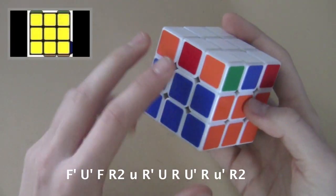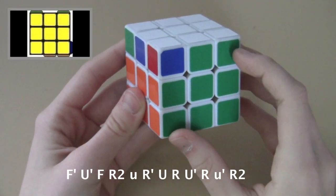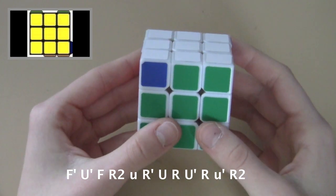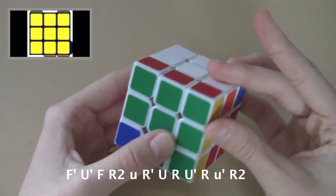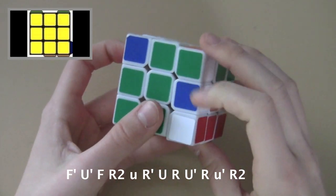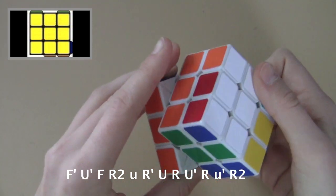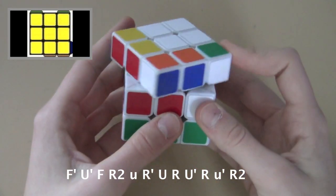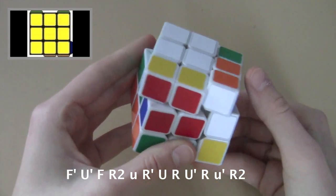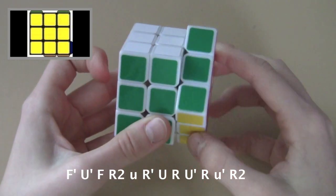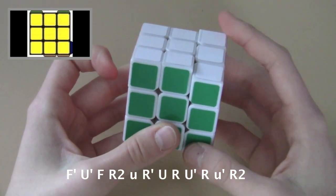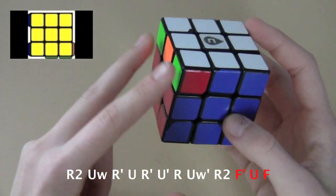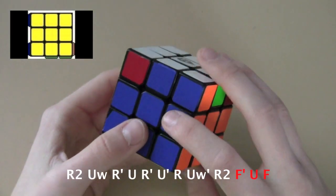So the first G-perm I'm showing you guys is the GB perm, and in my opinion it's the easiest one because the bar is in the F face and it's the only algorithm that uses the F face. So if you're holding the cube in the correct orientation, the bar will be in the F face and the headlights will be in the back.